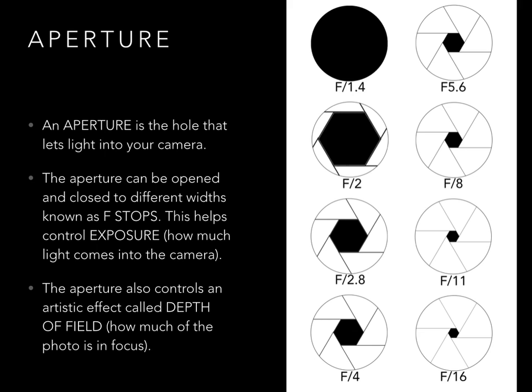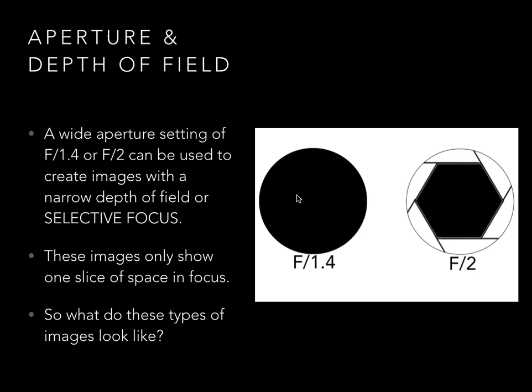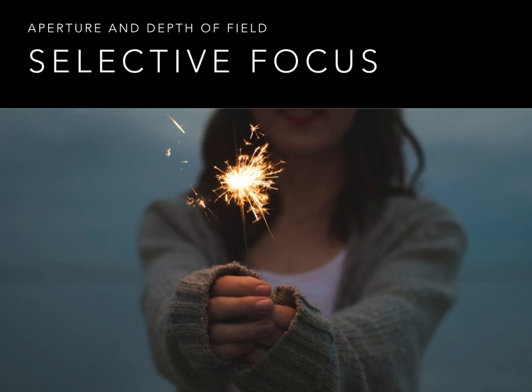Looking at aperture and depth of field, the aperture and depth of field almost work in opposite. The wider the aperture, the narrower the depth of field. A wide aperture of f/1.4 or f/2 is used to portray a narrow depth of field, also referred to as selective focus. These images only show one slice of space in focus.